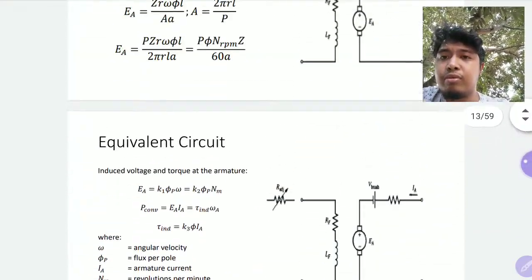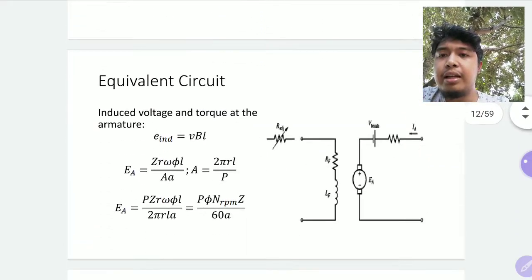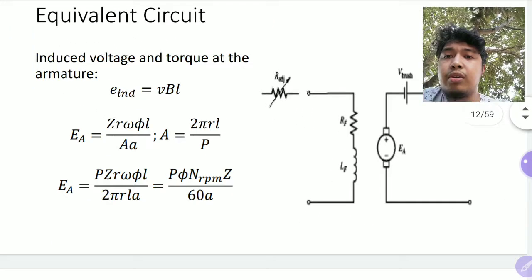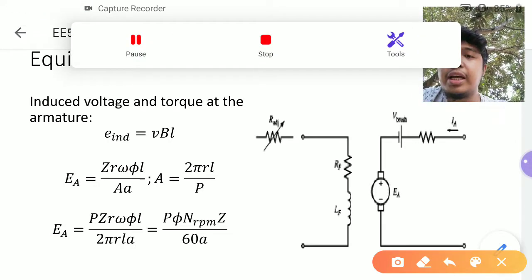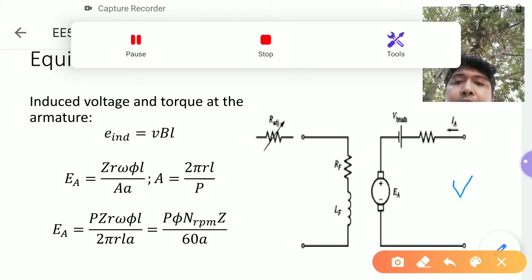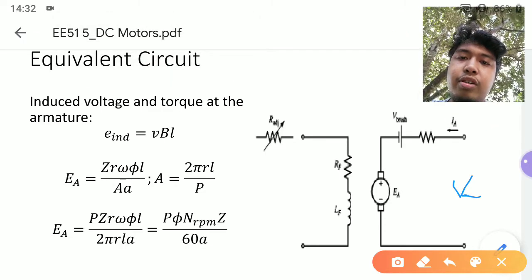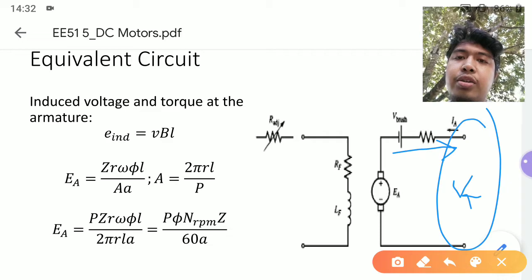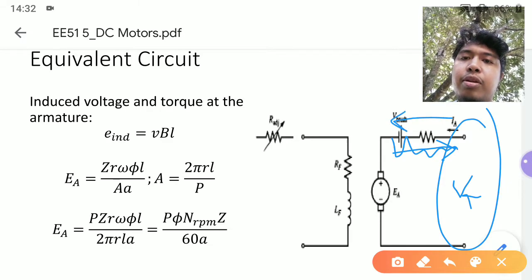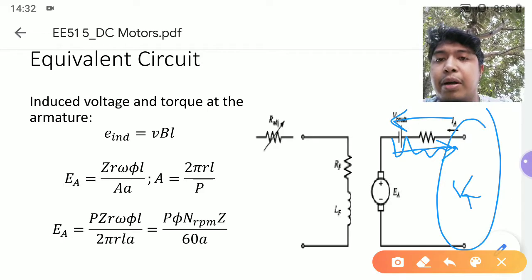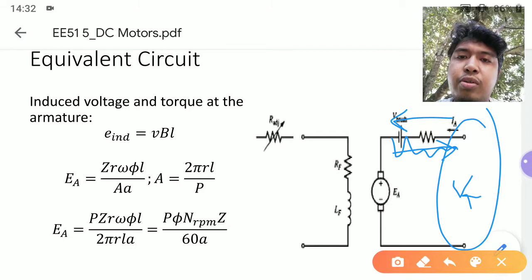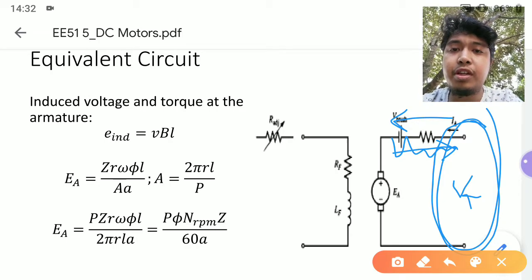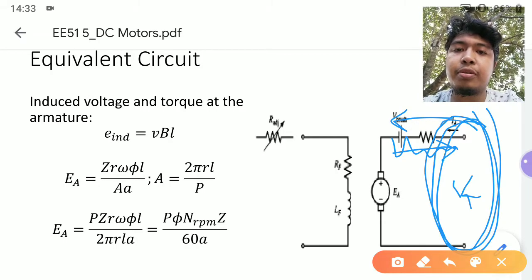The main difference between the motor and generator equivalent circuits is the direction of current. You have the terminal voltage at the terminal. Instead of the current going out, as in a generator, for motors the current goes into the machine — because it is taking electrical power as an input. So for motors, you have the input at the terminals, whereas for generators you have the output at the terminals.